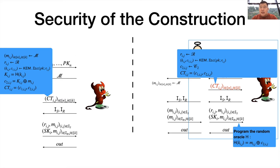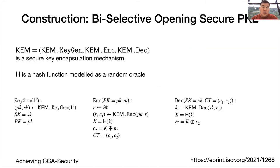Then in the opening phase, the simulator will send the correct internal states of the senders and receivers — that is, for each corrupted sender it sends the correct randomness, and for each corrupted receiver it sends the correct secret key to the adversary. It should also program the random oracle to make the opening and the ciphertext compatible. So that's why the scheme has biased-selective opening security. We can also achieve CCA security by modifying the basic construction; please see our full paper for more details.